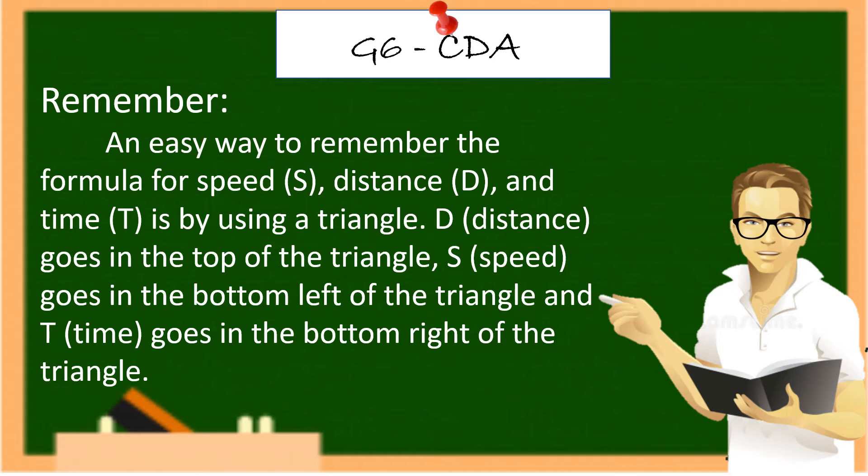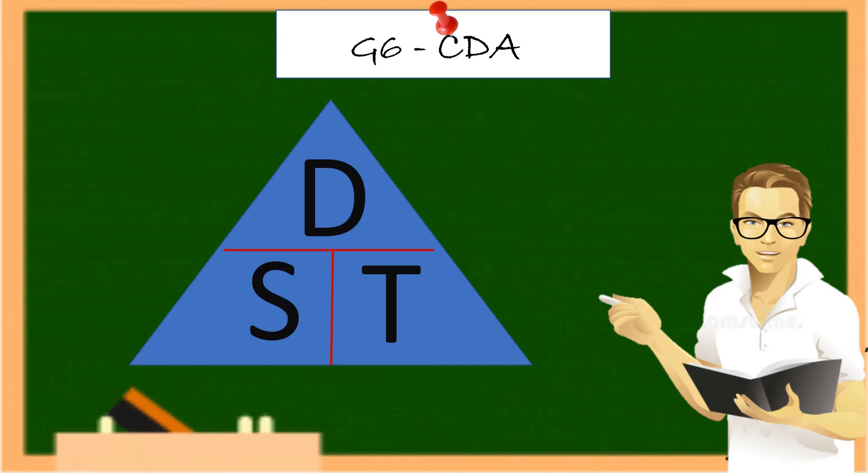Remember, an easy way to remember the formula for speed (S), distance (D), and time (T) is by using a triangle. D for distance goes in the top of the triangle, S for speed goes in the bottom left of the triangle, and T for time goes in the bottom right of the triangle. It looks like this.